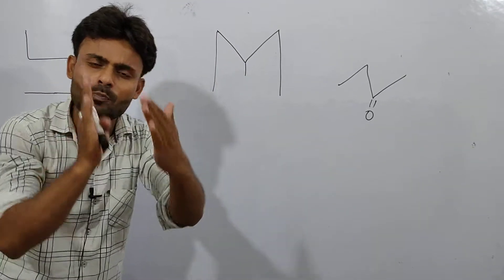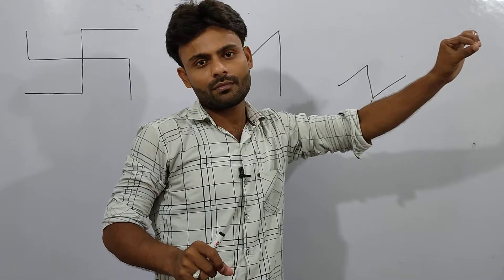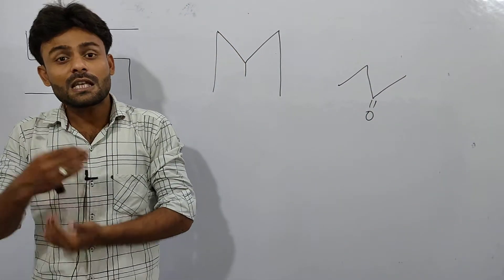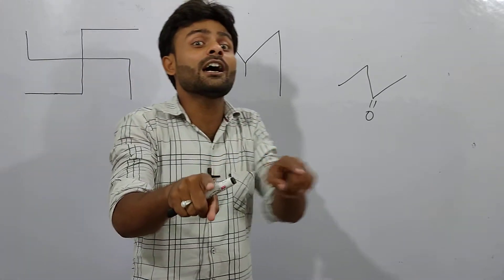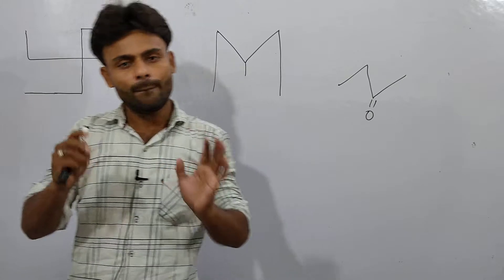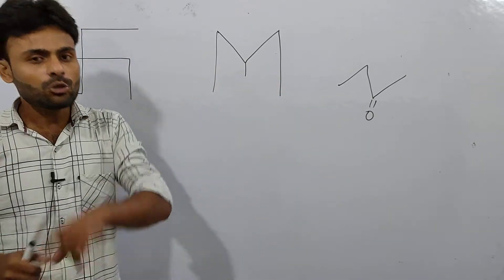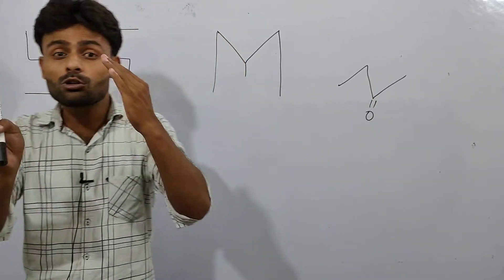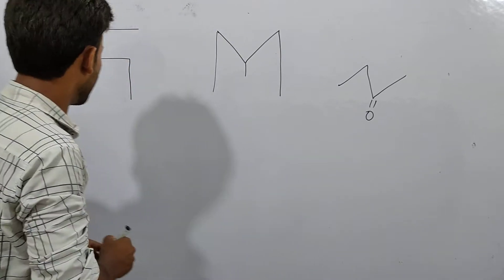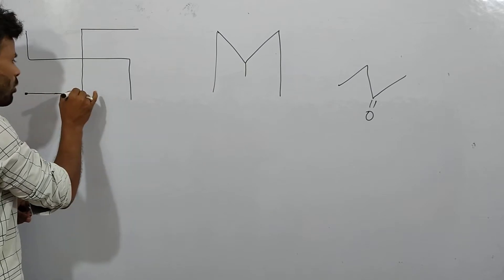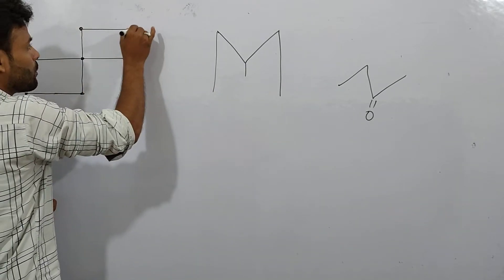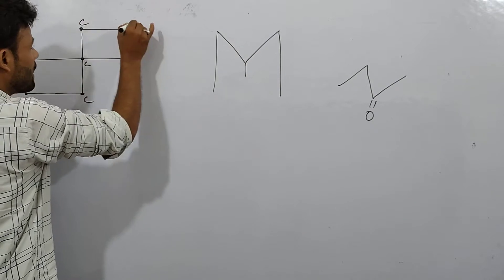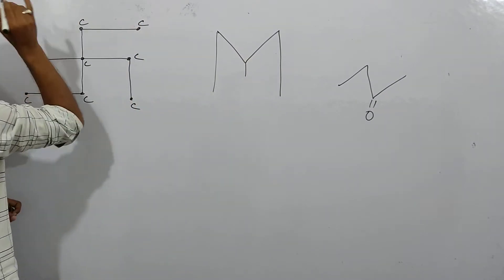So you always remember that in IUPAC line bond formula, when you see the corner, what will happen? Carbon will be seen at each corner. If you understand, the corner is here. Where you see the corner, there will be your carbon. Here will be carbon, here will be carbon, here will be carbon.